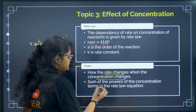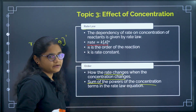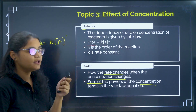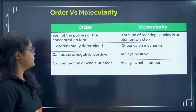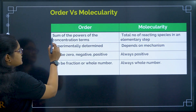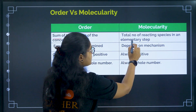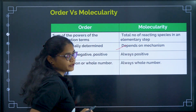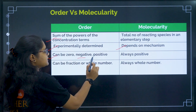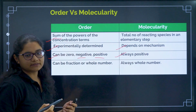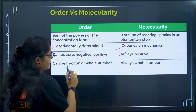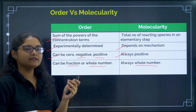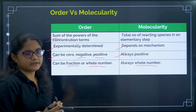The order of reaction tells us how the rate will change when concentration changes. For example, if concentration is doubled, will the rate double, become 4 times, or become half? The order is the sum of the powers of the concentration terms. Comparing order versus molecularity: order is experimentally determined and can be 0, positive, negative, or a fraction; molecularity is the total number of reacting species in an elementary step and is always a positive whole number.